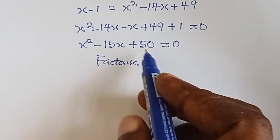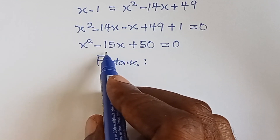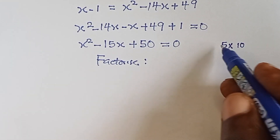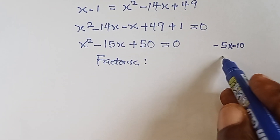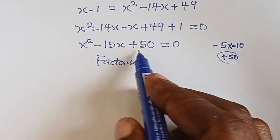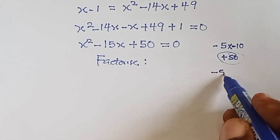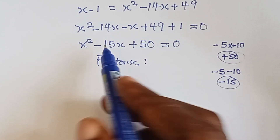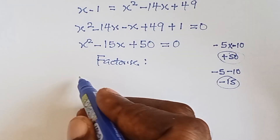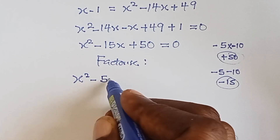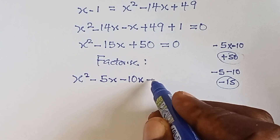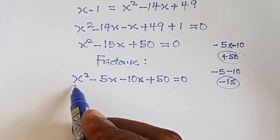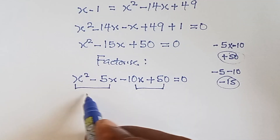Let's factorize. We need factors of 50 that add up to minus 15. Minus five times minus ten gives plus 50, and minus five plus minus ten is minus 15. So we use minus five and minus ten, giving us x squared minus five x minus ten x plus 50 equals zero.